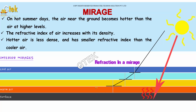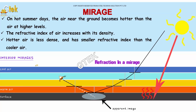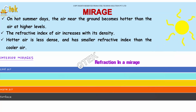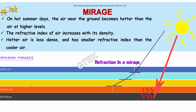You are able to see the warm air, cool air, and how the refraction and reflection is happening. The refractive index of air increases with its density. Hotter air is less dense and has a smaller refractive index than cool air.